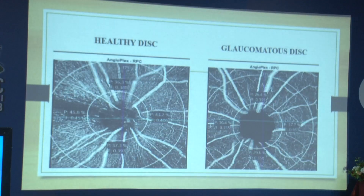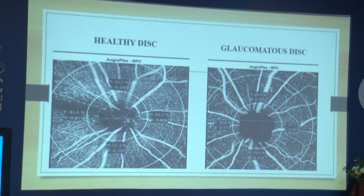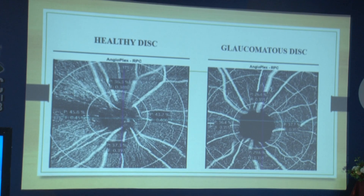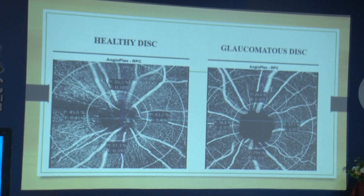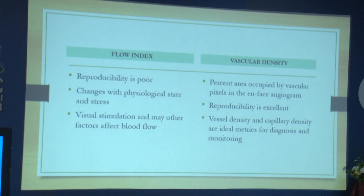This is a picture from Angioplex. It gives a p-value and the flux index. The p-value represents vascular density in each quadrant. This is a healthy disc, and there is a marked reduction on the glaucomatous disc. The two main parameters provided are flow index and vascular density.